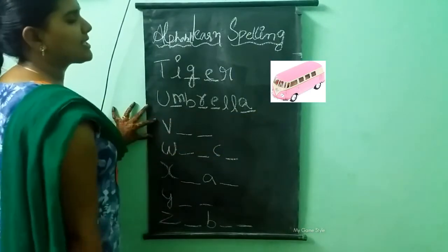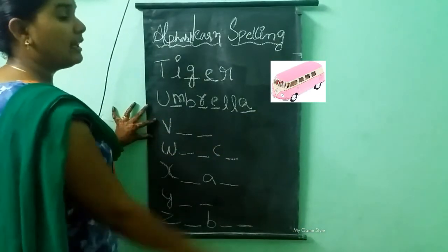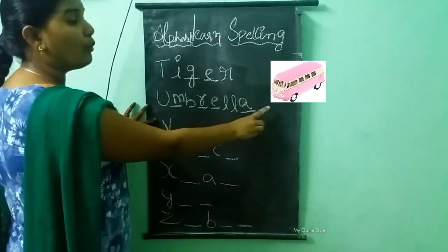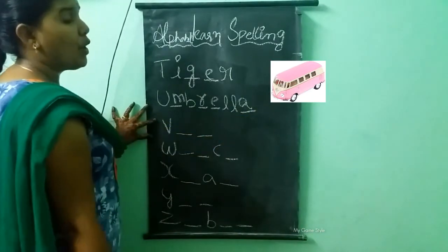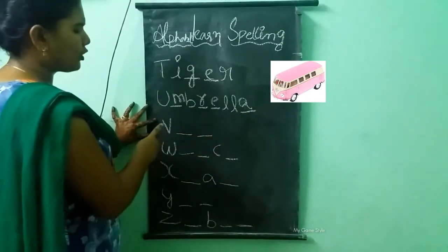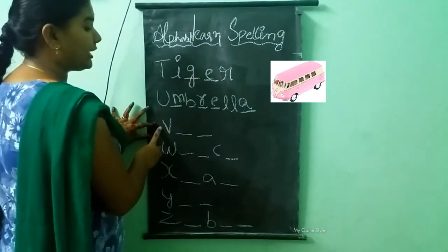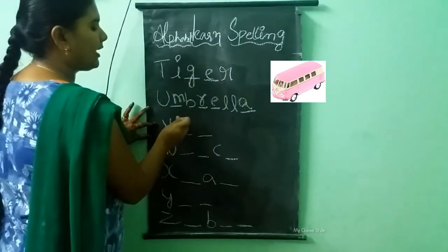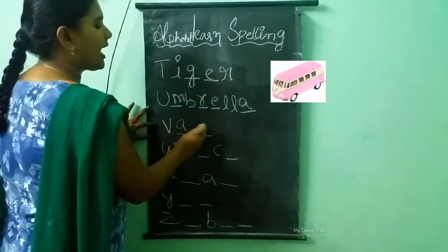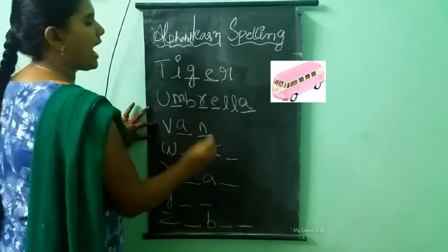What picture is this? This is a van. What is the spelling of van? V-A-N. Van.